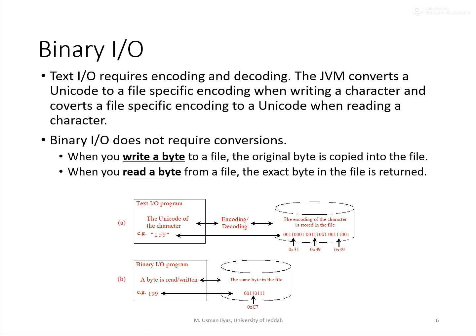With regards to efficiency, binary IO is much more efficient than text file IO. The reason is that when you read or write data from a text file, there's an extra encoding and decoding step that happens in the process of writing to and reading from a text file, something that doesn't happen with binary files. In binary files, when you write a byte to a file, those bits go to the file exactly the same way as they are in the byte variable you're working with in your program. That is not the case for text files.